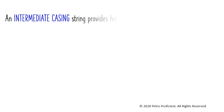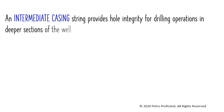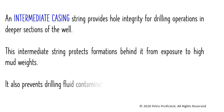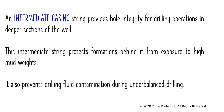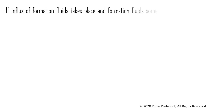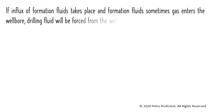An intermediate casing string provides hole integrity for drilling operations in deeper sections of the well. This intermediate string protects formations behind it from exposure to high mud weights. It also prevents drilling fluid contamination during underbalanced drilling. If influx of formation fluids takes place — and formation fluids, sometimes gas, enters the wellbore — drilling fluid will be forced from the wellbore to surface.